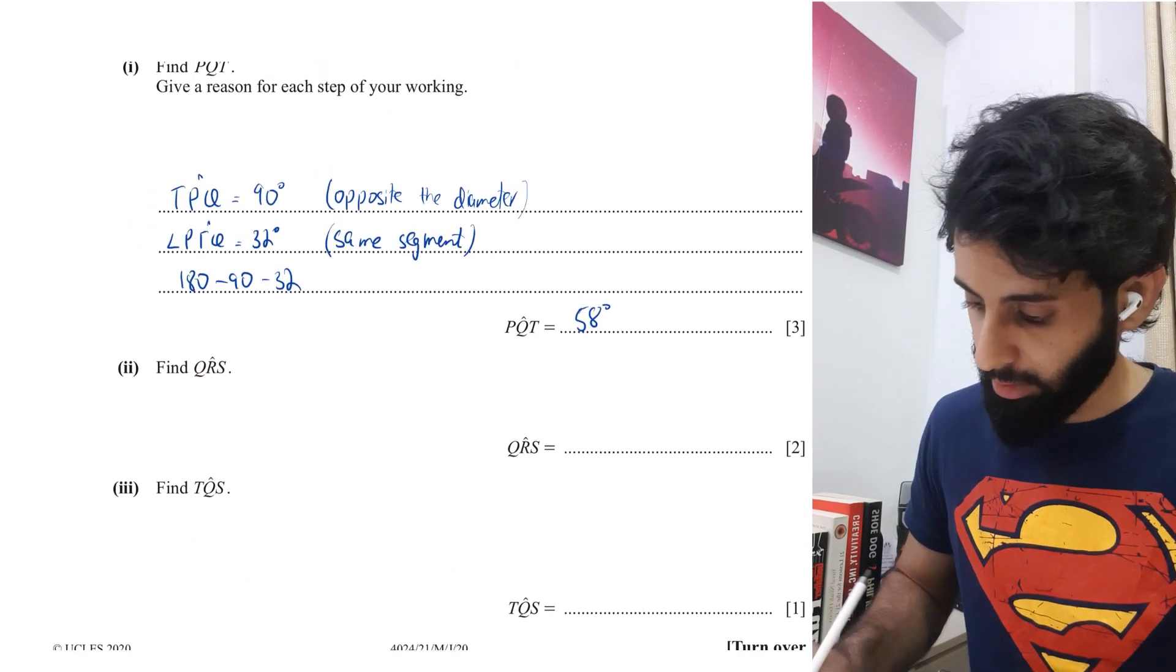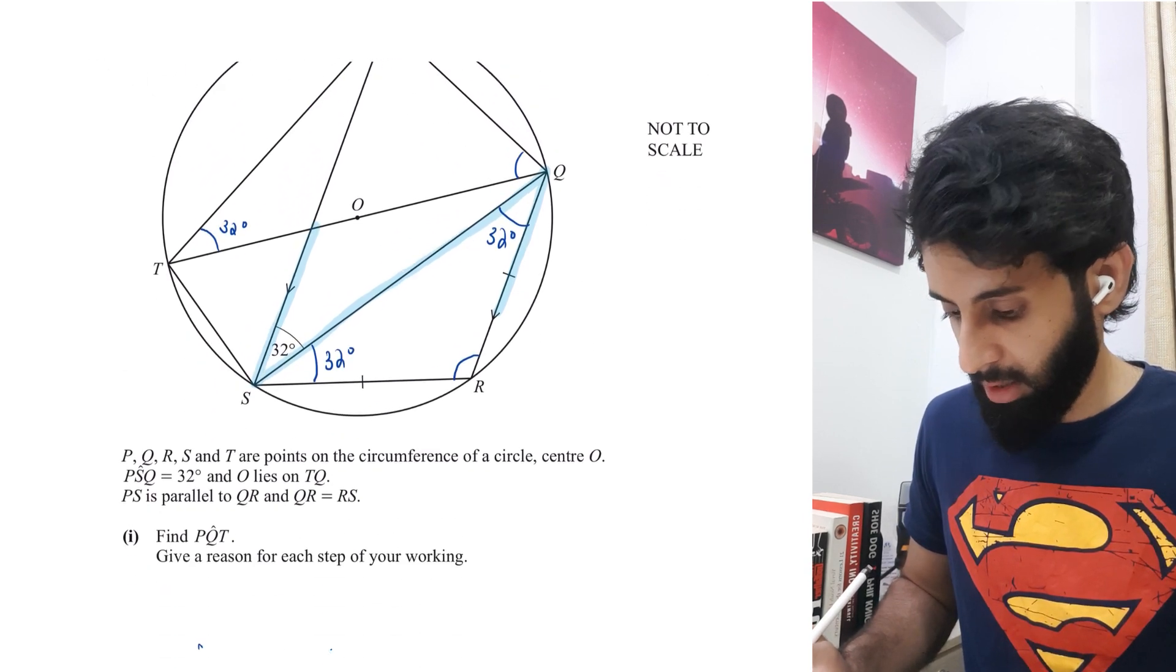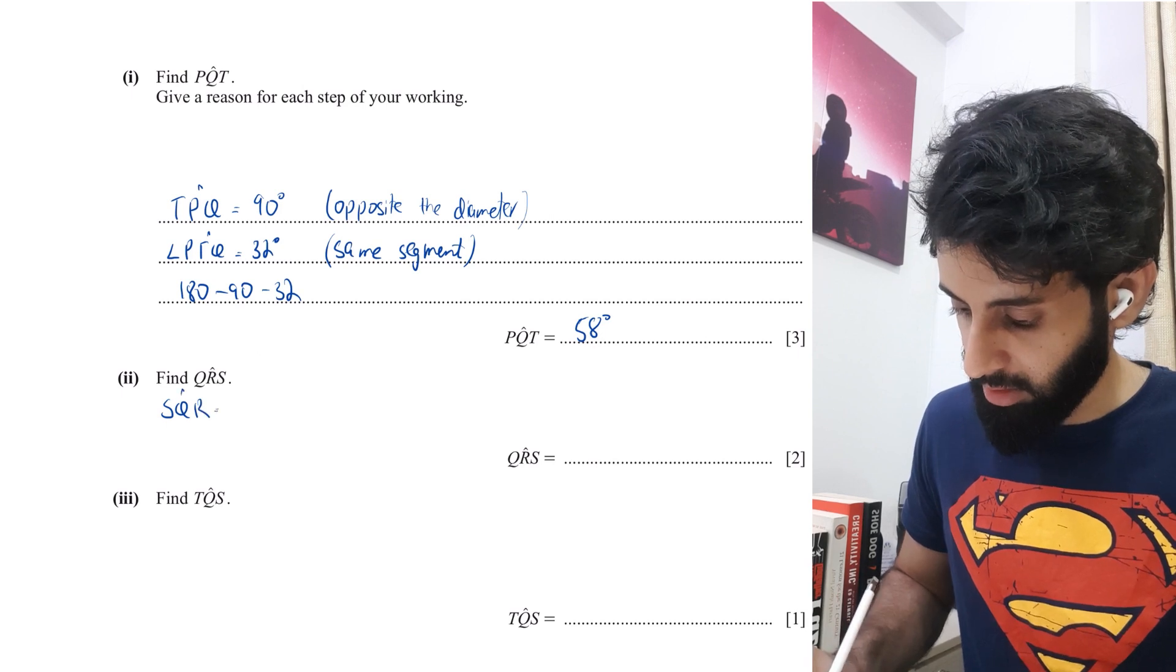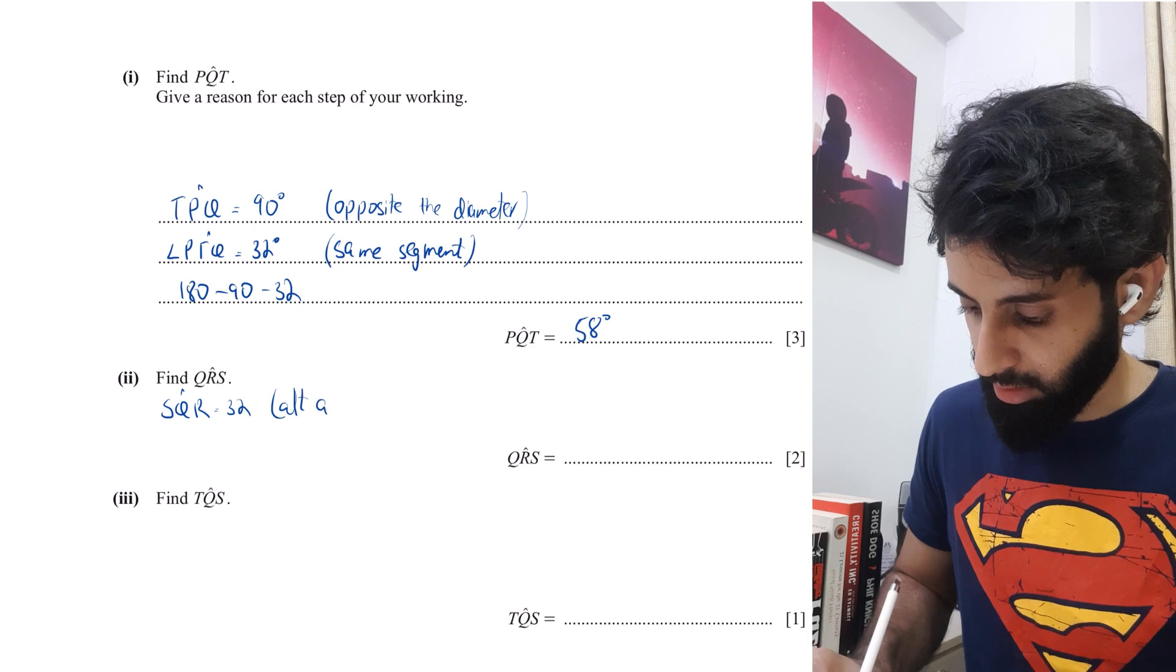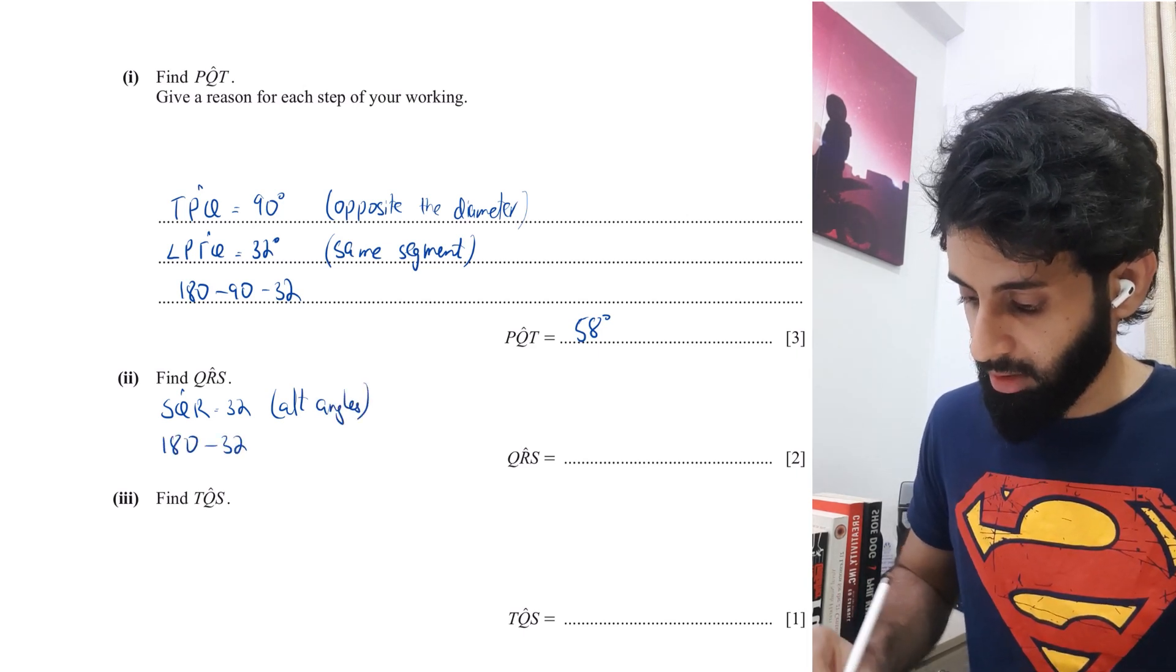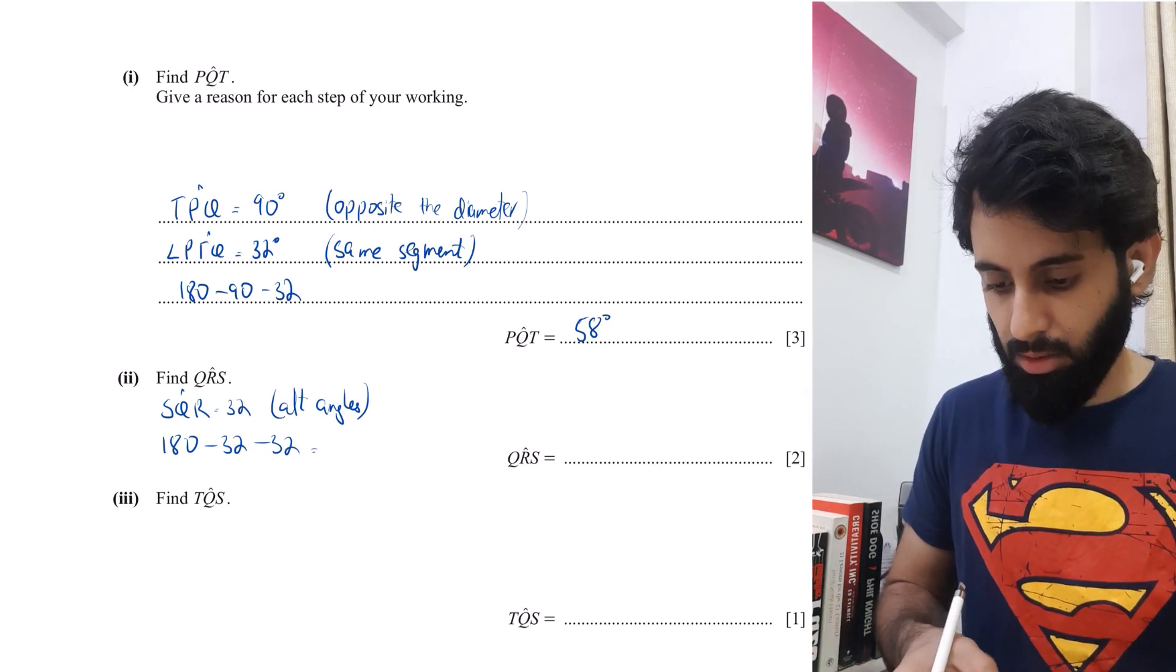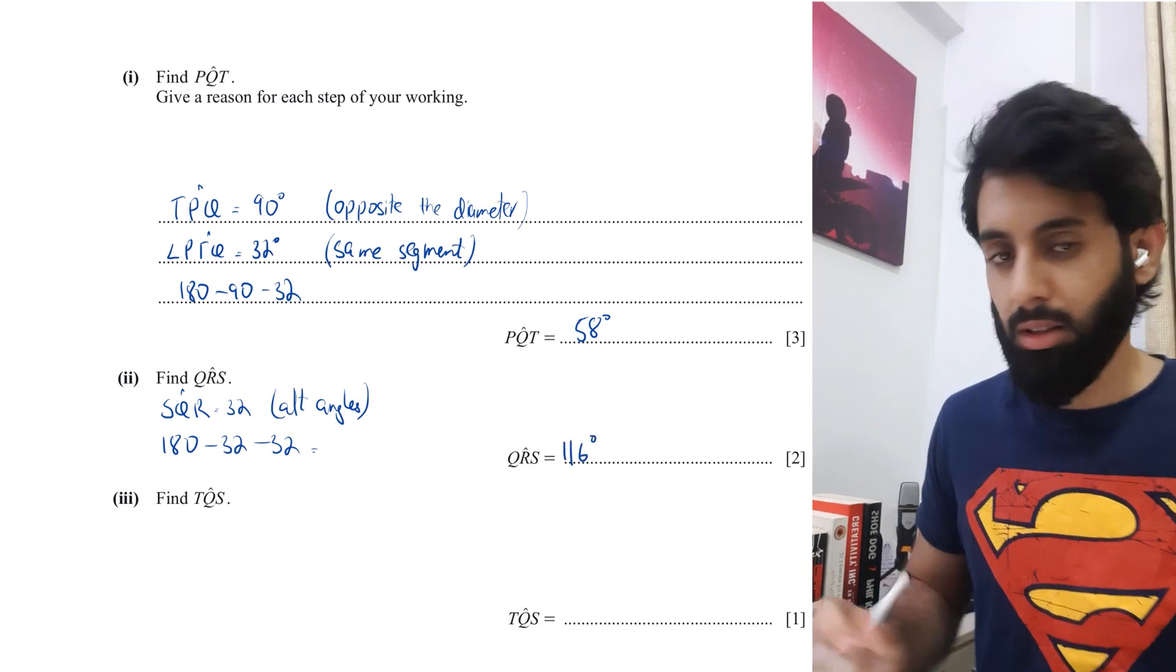And because QRS is an isosceles triangle, this angle will also be 32 degrees. We'll state that SQR equals 32 because of alternating angles - make sure you mention that. Then work out 180 minus 32 minus 32. That's 116, the correct answer.